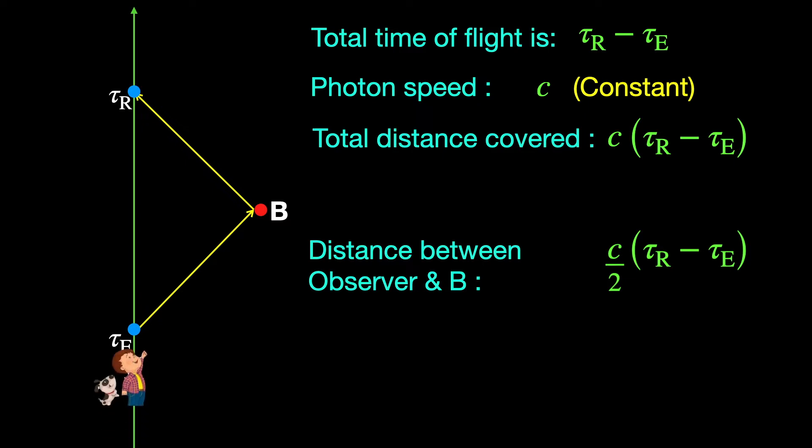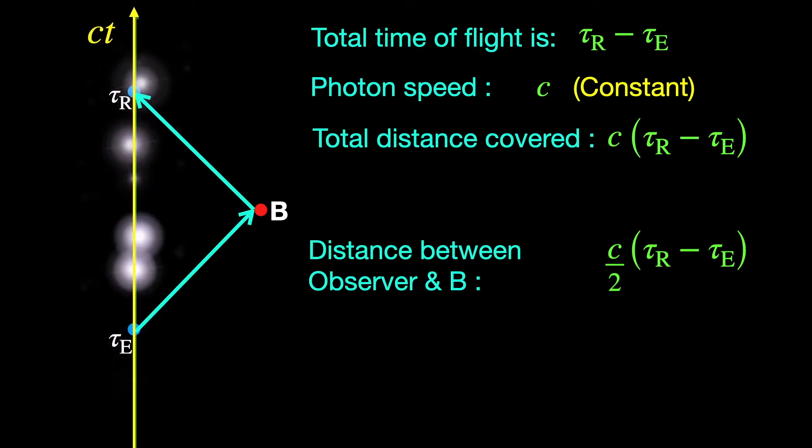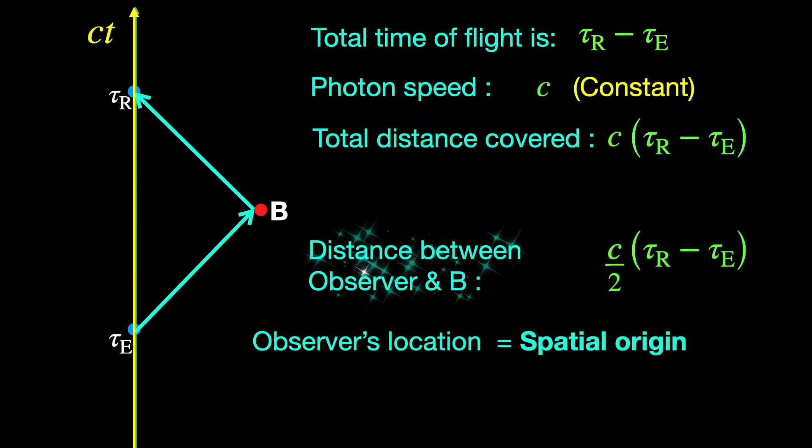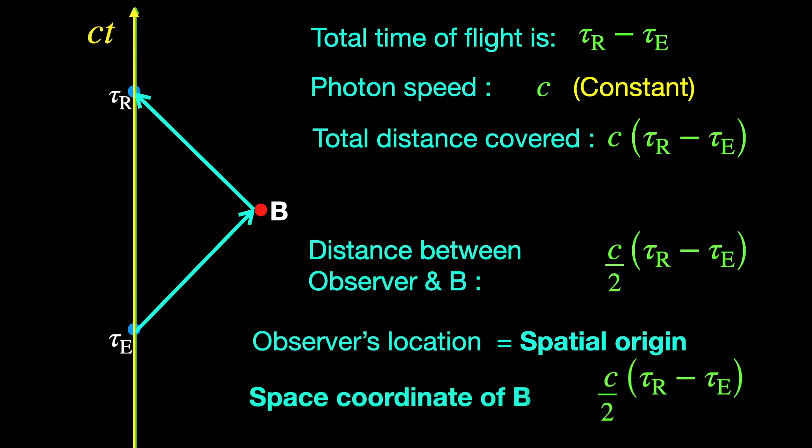It started from the observer and went back to the observer only at a later time. Since the world line of the observer is the time axis, every point on it indicates the same spatial location of our observer. He is the only observer in this scenario, so his location can serve as the spatial origin. Therefore, the spatial distance of the event B from the observer works as the spatial coordinate XB of the event B and we have figured out what its value is using the two clock readings.